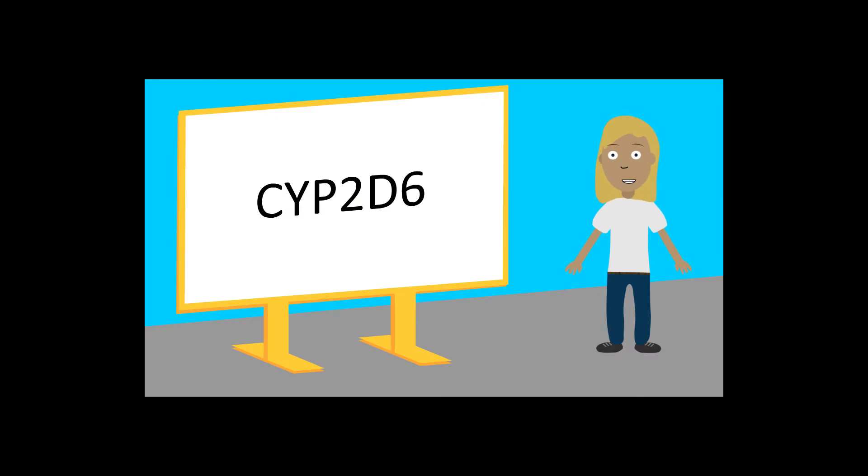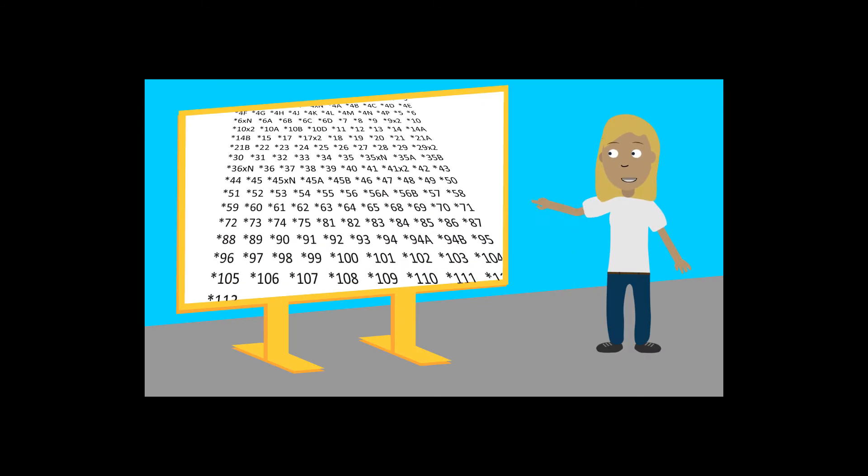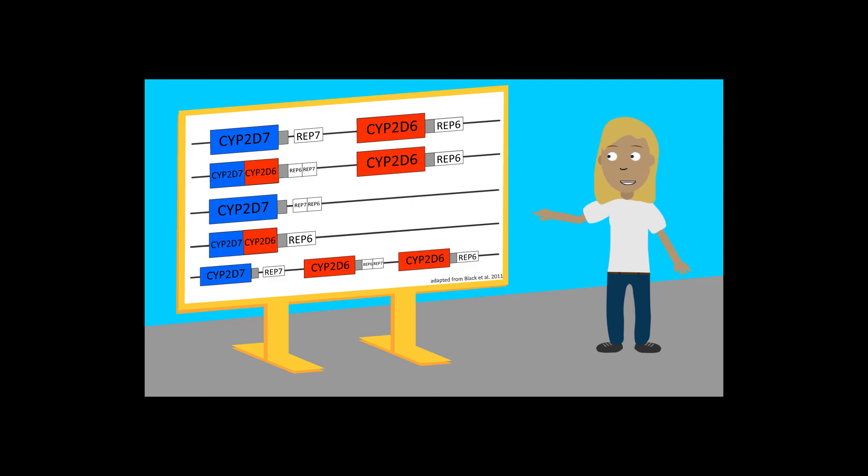CYP2D6 is particularly difficult to genotype due to extensive sequence and structural variation. For my project, we are interested in assessing how much of the variability in CYP2D6 activity is explained by single nucleotide variants and indels alone, and if the inclusion of structural variation data improves the association.